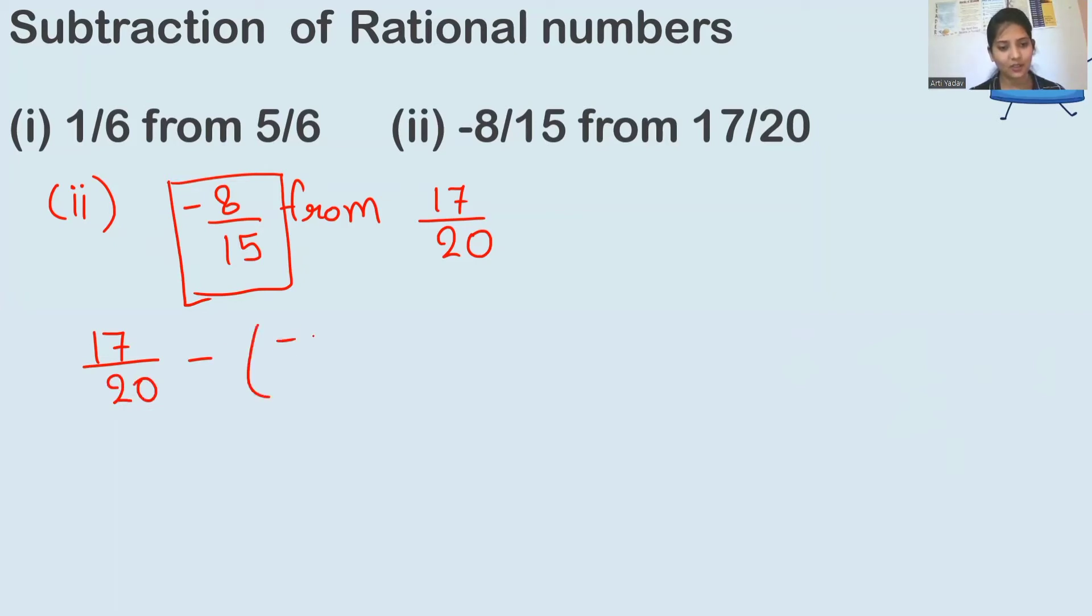This number we will write in the beginning: 17 upon 20 minus, and this is already a negative rational number so I will write it in a bracket.